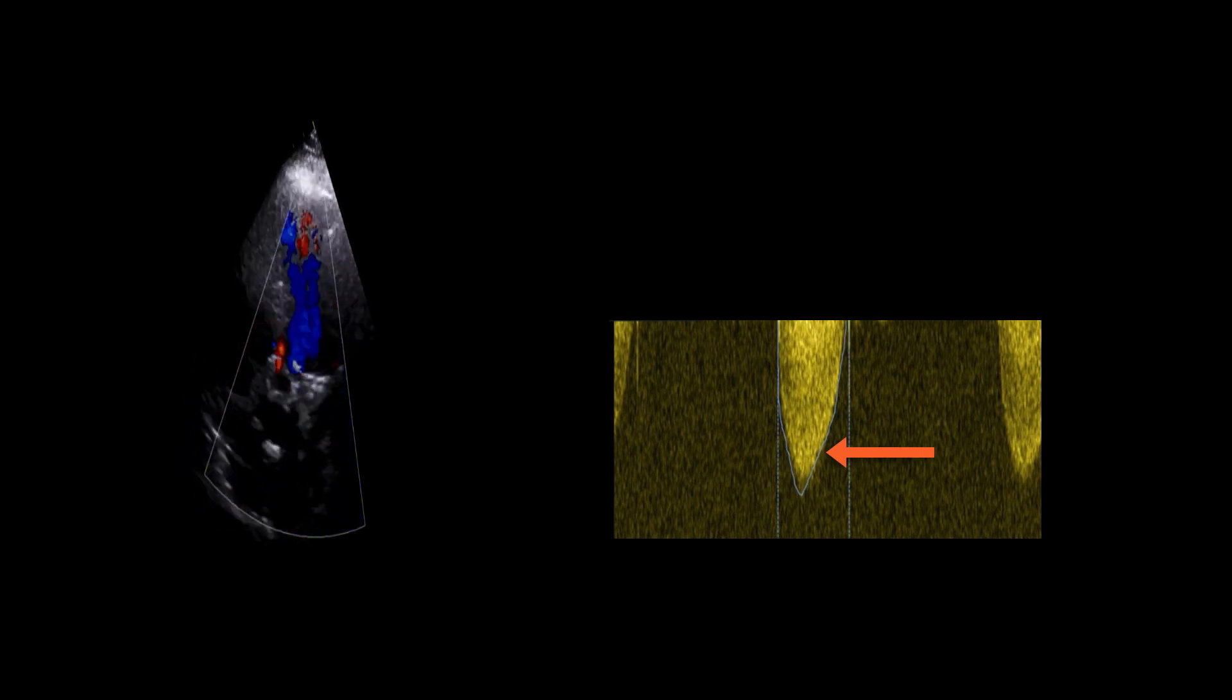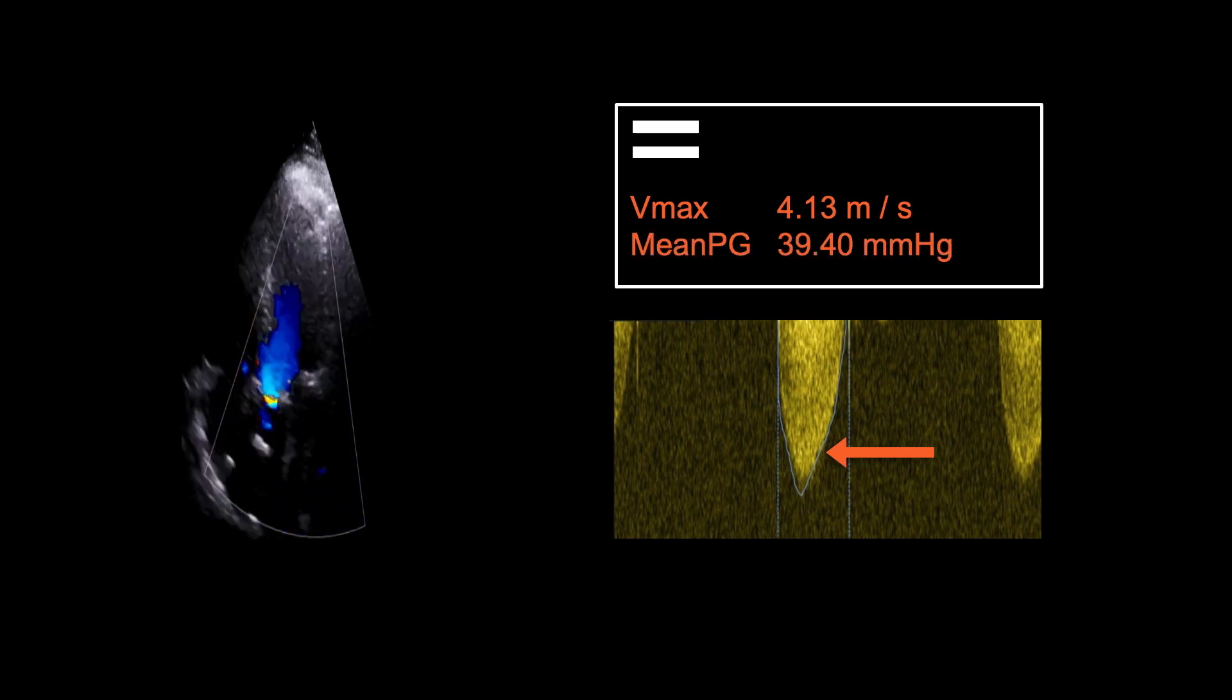Again, we trace the Doppler profile to assess the flow and pressure gradients across the valve. For this patient, the peak velocity is 4.13 m per second, with a mean pressure gradient of 39.4 mmHg.